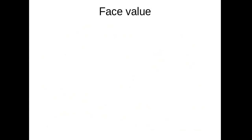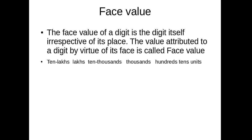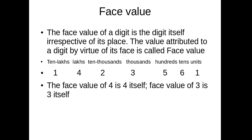First, we are going to learn about face value. The face value of a digit is the digit itself, irrespective of its place. That means, the value attributed to a digit by virtue of its place is called face value. So, the face value of 4 is 4 and the face value of 3 is 3. There is no need related to its place.